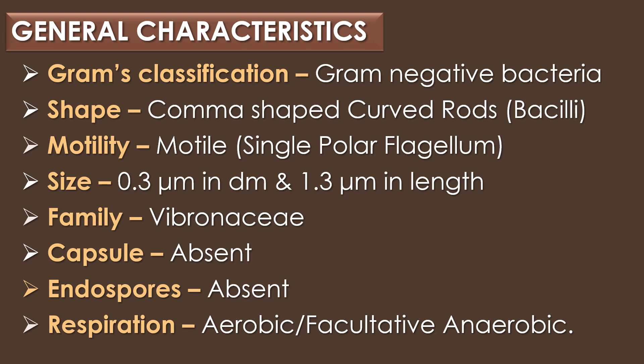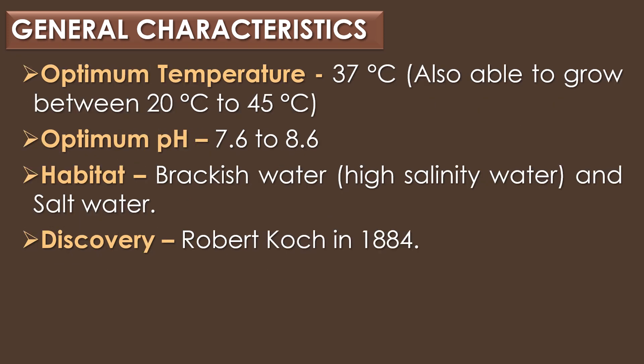The mode of respiration observed in Vibrio cholerae is aerobic respiration or facultative anaerobic respiration. The optimum temperature required for the cultivation of Vibrio cholerae is 37 degrees Celsius, and it can also grow between 20 degrees Celsius to 45 degrees Celsius.